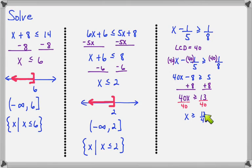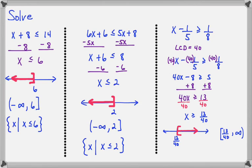You'll have x is greater than or equal to 13 over 40. Don't let it bother you if the answer is a fraction — that's going to happen every now and then. Just graph your inequality, shade to the right, and put the bracket. The interval notation is bracket 13/40 comma infinity. For set builder notation, we say the set of all x's such that x is greater than or equal to 13/40.